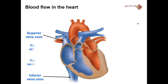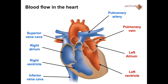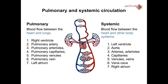Blood flow in the heart: we have the superior vena cava and the inferior vena cava, the right atrium and right ventricle. Blood is pumped in through the right side — from the right atrium into the right ventricle, then out through the pulmonary artery. Blood then comes back in from the pulmonary vein, into the left atrium, then into the left ventricle. So: pulmonary vein, left atrium, left ventricle, and out.